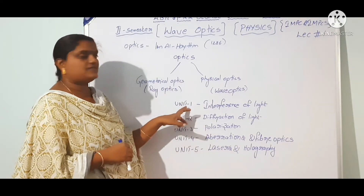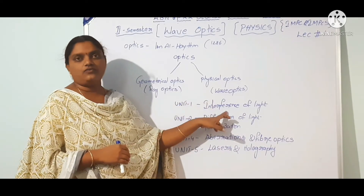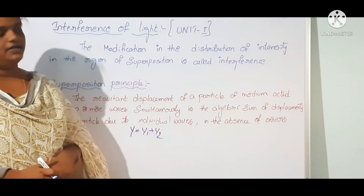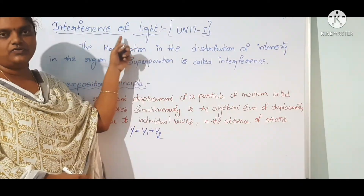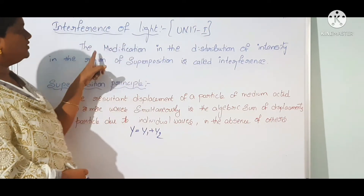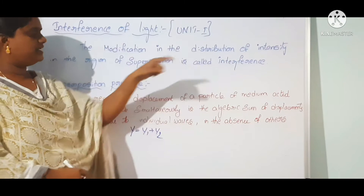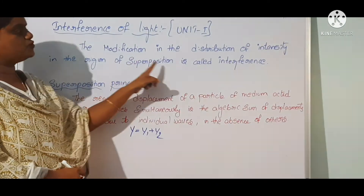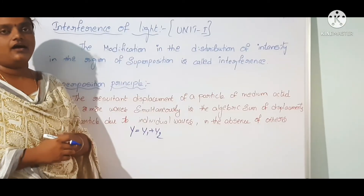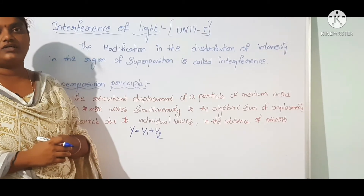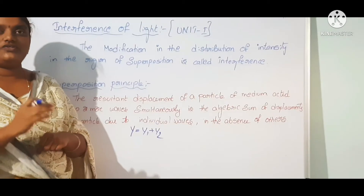Today we will discuss Unit 1, interference of light. The modification in the distribution of intensity in the region of superposition is called interference. When two waves are superimposed, the intensity of light is modified.